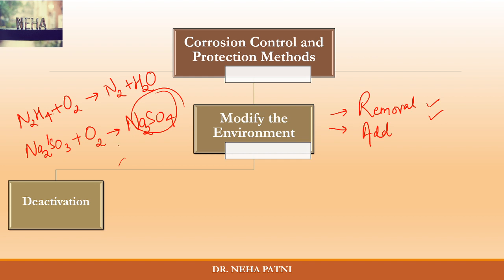So deactivation means you deactivate the thing which is present. Normally, the presence of oxygen occurs at the cathode where the reaction takes place. What you want to do is deactivate that oxygen by adding certain chemicals which react with it — two examples are sodium sulfite and hydrazine.